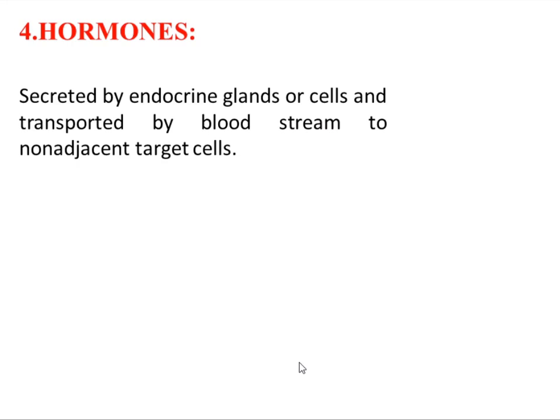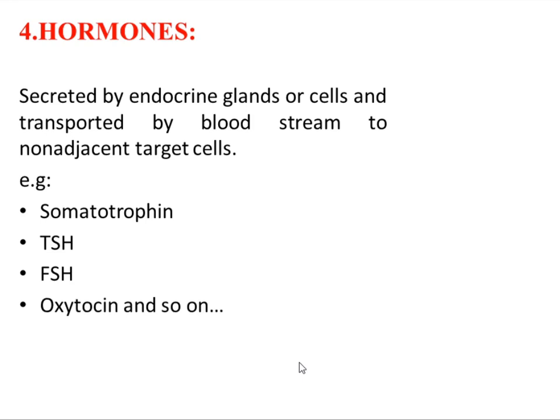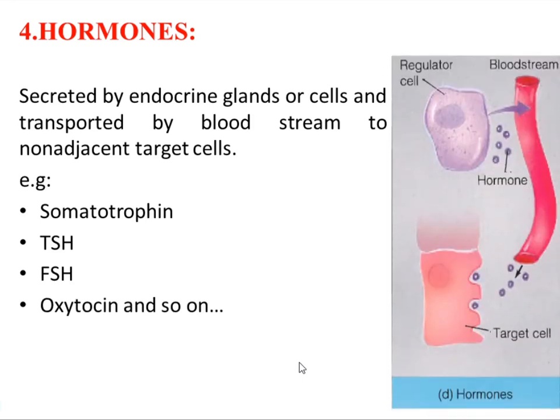The next chemical messenger is the hormone. We will discuss hormones in detail in the next video tutorials; here we see them just as a chemical messenger. Hormones are secreted by endocrine glands or cells and are transported via the bloodstream to non-adjacent target cells. Examples include somatotrophin (the growth hormone), thyroid stimulating hormone, follicle stimulating hormone, and oxytocin. They are secreted by regulatory cells into the bloodstream and travel to affect target cells produced by endocrine glands.